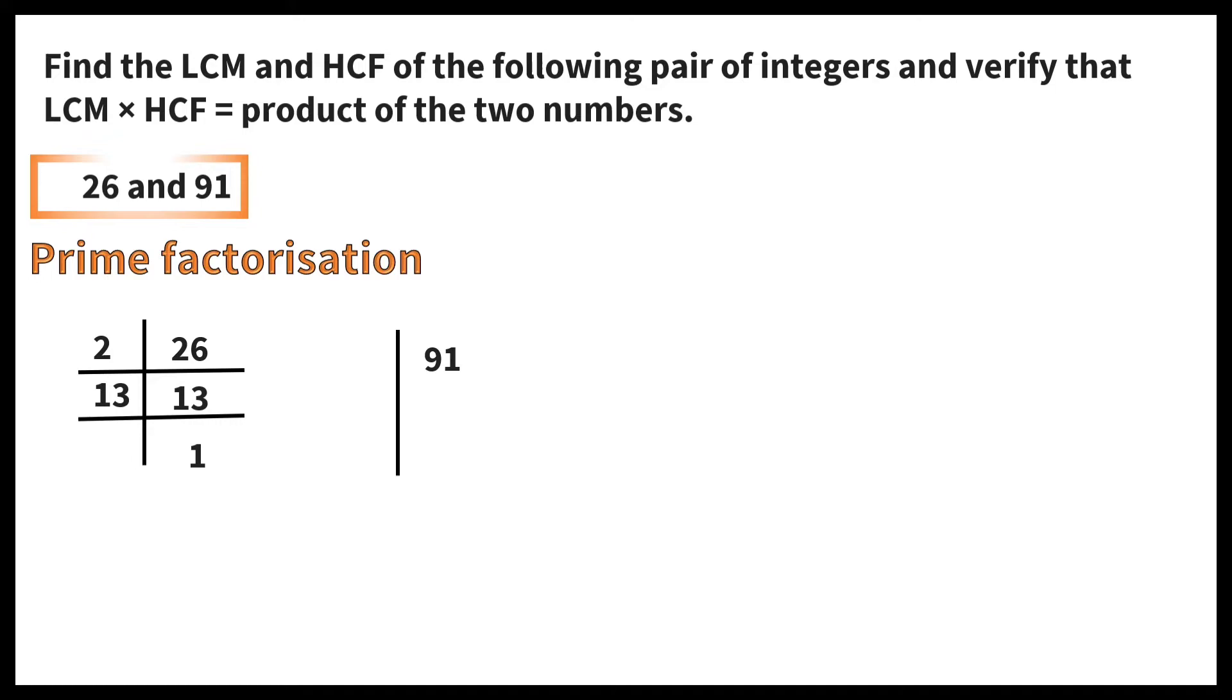Now let us find the prime factors of 91. 91 is not even number, so definitely not divisible by 2, neither it is divisible by 3 or 5. It is divisible by 7. 7 thirteens are 13, 1 thirteen is 13. So 26 can be written as the product of prime factors as 2 into 13, 91 as 7 into 13.